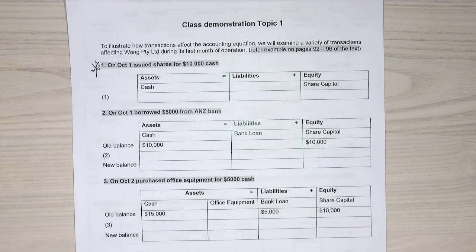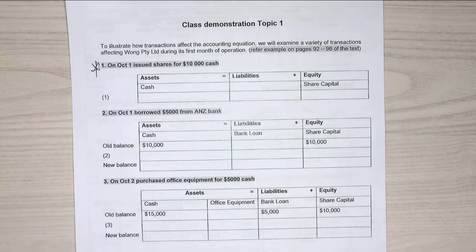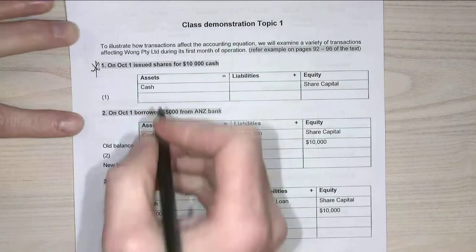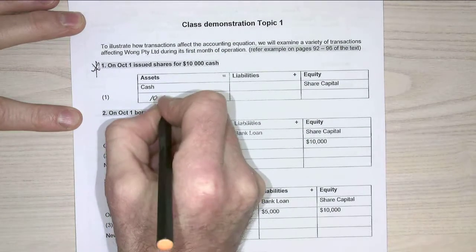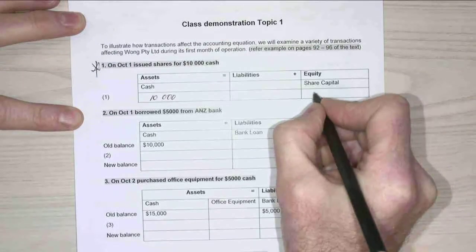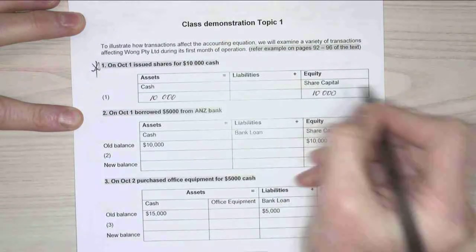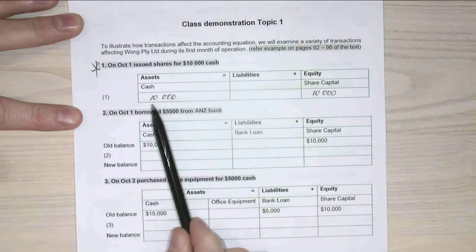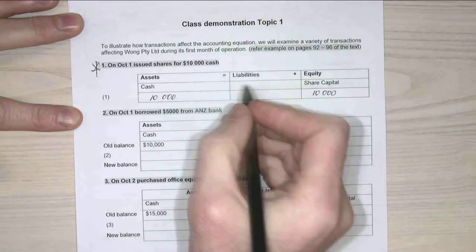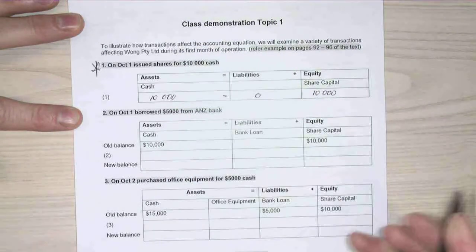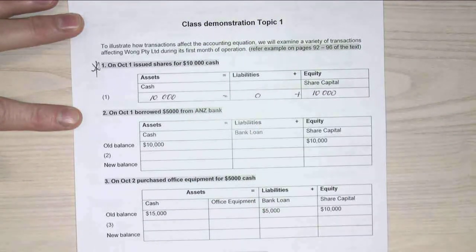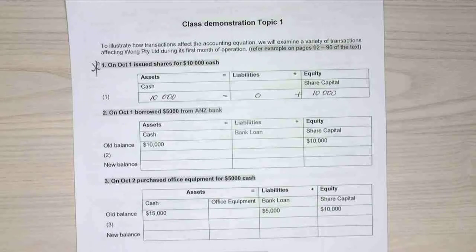In which directions is it affecting my cash and equity? So I've issued shares for cash — the business gives someone shares and they give us cash. We're going to have an increase of $10,000 for cash and an increase of $10,000 for share capital. My assets now equals my liabilities plus my equity, so my accounting equation balances.